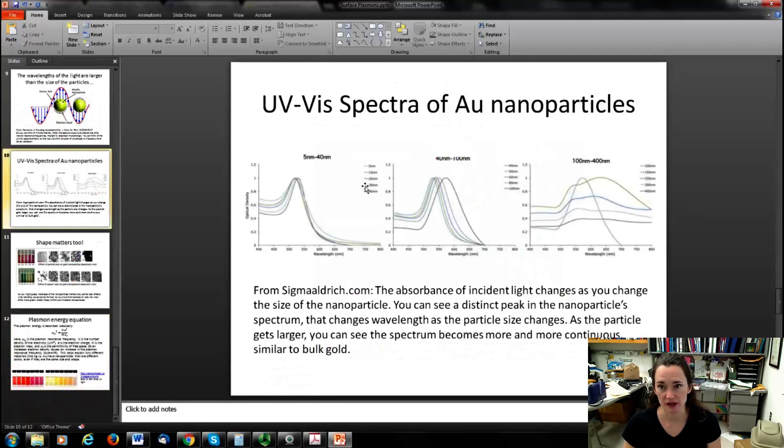So let's take a look at some UV visible light spectra of these gold nanoparticles. So the size of the nanoparticle is indicated at the top of the set of graphs. So here on the left, the size of the nanoparticle ranges from 5 nanometers to 40 nanometers. In the middle, it's ranging from 40 nanometers to 100 nanometers. And then here on the right, it goes from 100 to 400. So you'll notice something interesting if you look at these curves. First of all, in the middle curve, as you change the size of the nanoparticle, as it ranges from 40 nanometers here on the left to 100 nanometers here on the right, you see a shift in the wavelength. So the absorbance of the incident light changes as you change the size of that nanoparticle. And that makes sense if you think about the confinement of that wave to a specific geometry and how that is going to be dictated by the geometry.